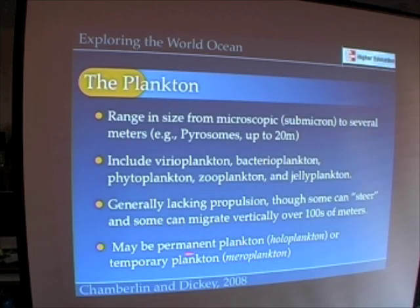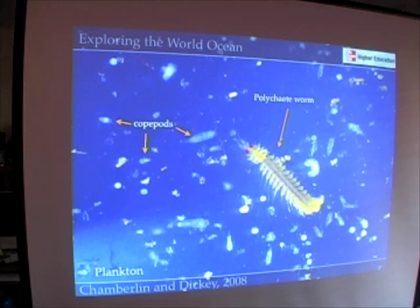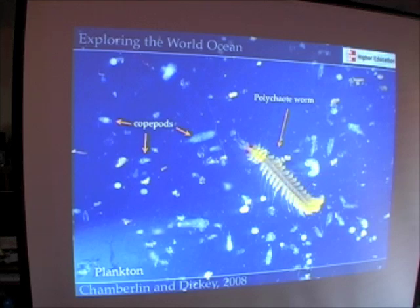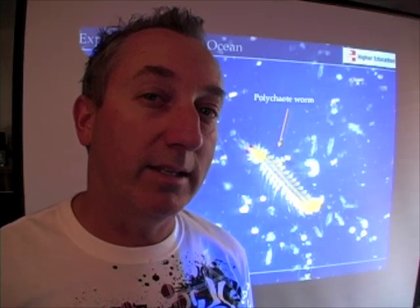Plankton may also be permanent plankton — what we call holoplankton — or temporary plankton, what we call meroplankton. Copepods, as mentioned, are holoplankton; they live their entire life as plankton. But a worm might be a temporary visitor to the plankton — a meroplankton. These are plankton found right off of Newport Beach, our local plankton — and the kinds of organisms you swallow when you swallow seawater at the beach.